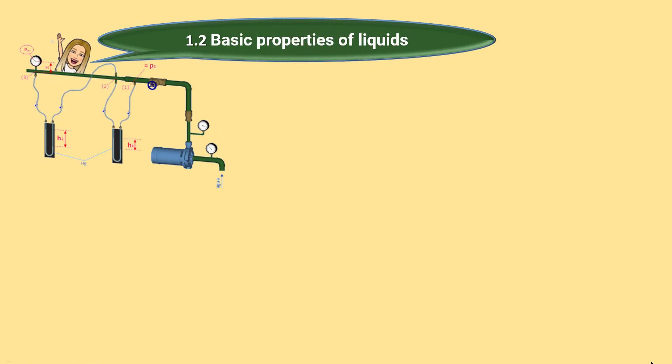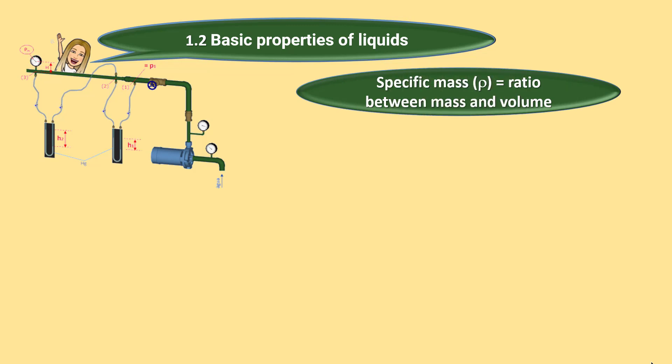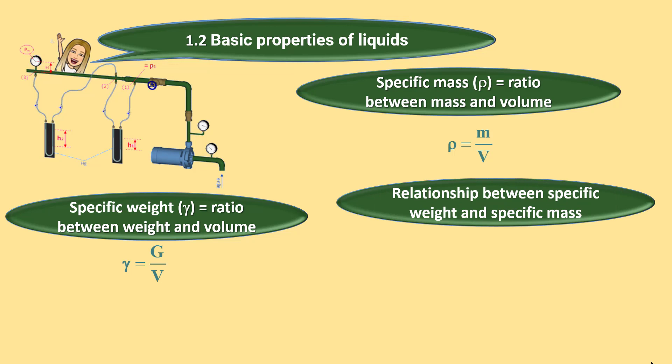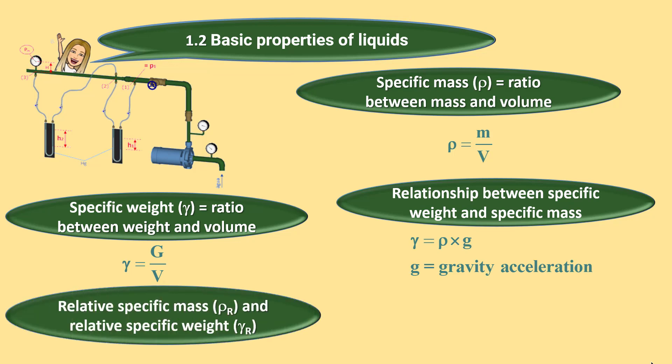Basic properties of liquids. Specific mass Rho equals ratio between mass and volume. Specific weight Gamma equals ratio between weight and volume. Relationship between specific weight and specific mass. Gravity acceleration, relative specific mass and relative specific weight.